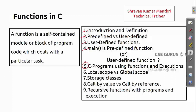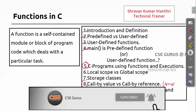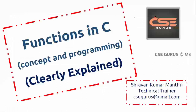In the previous video lecture we saw programs using functions and execution with respect to output. Now before going to local, global, and storage classes, I'll first cover call by value and call by reference with examples, followed by programs using arrays with functions. After that we'll go for scopes, storage classes, and recursions. Hello everyone, this is Sravan Kumar Mantri, technical trainer, welcome to our channel CSE Gurus.